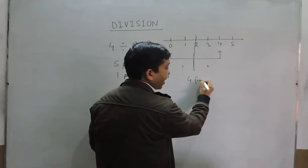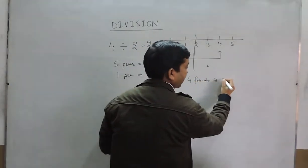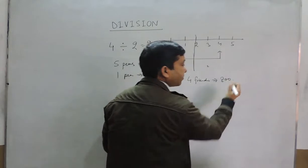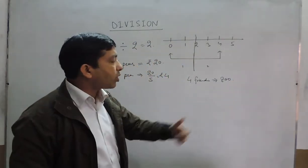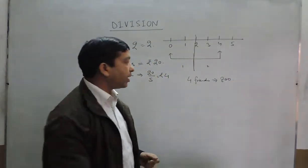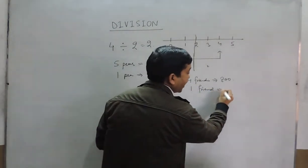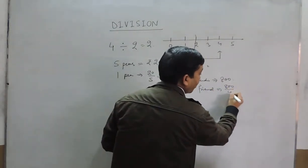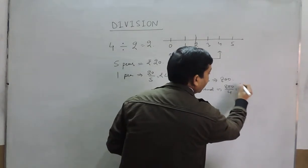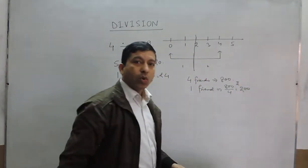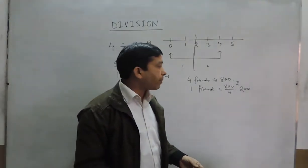When you go to a party and suppose there are four friends, and these four friends together spend rupees 800 and want to distribute among themselves, one friend has to pay 800 divided by 4, which is 200 rupees.